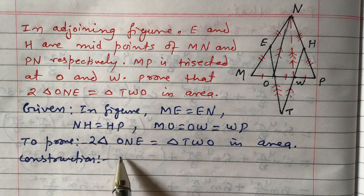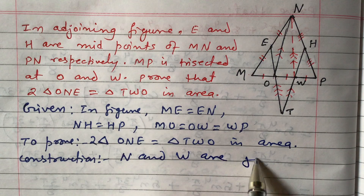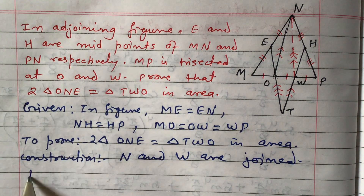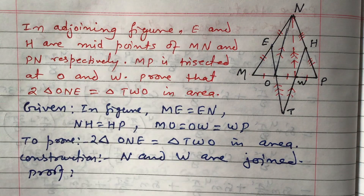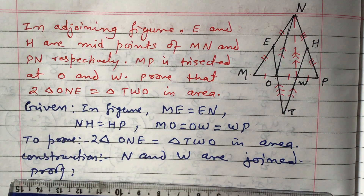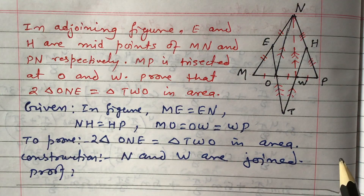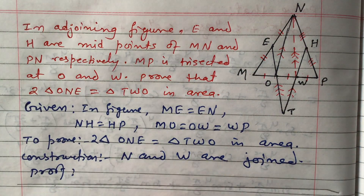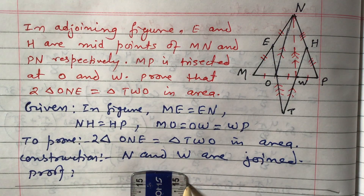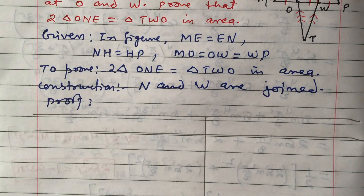Construction note: N and W are joined. Now the proof begins. We divide the working into statements and reasons.